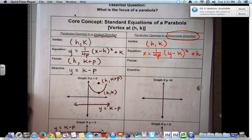We have the focus at h plus p, k. And our directrix is x equals h minus p.